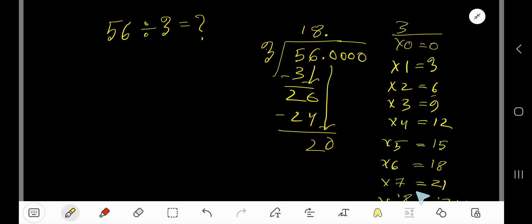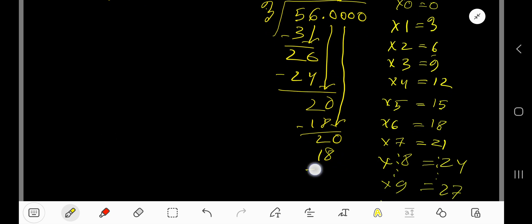3 goes into 20 how many times? 7 times 3 is 21, which is greater, so 6 times. 6 times 3 is 18. Subtract to get 2. Bring down another zero. 3 goes into 20, 6 times. 6 times 3 is 18. Subtract 2, bring down another zero.